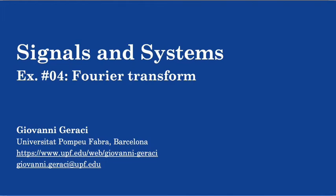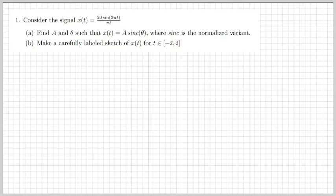So let's get started with the Fourier transform. The first exercise we have to solve today is the following. We're given a signal x of t, which is 20 sine of 2π t over π t. First of all, we need to find values for a and θ such that x of t can be written as a·sinc of θ, where sinc is the normalized variant of the sinc function.